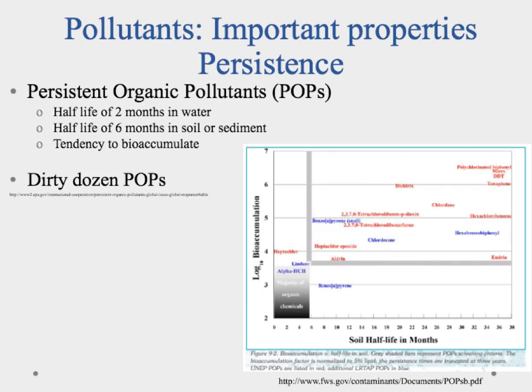It's one of the ways that the EPA and others have decided to characterize what they call persistent organic pollutants. The requirements to be a persistent organic pollutant, or a POP, are a half-life of two months in water and a half-life of six months in soil or sediment.